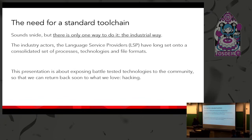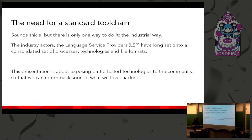Why do we need a standard toolchain? Although there are a lot of solutions out there to translate documents and software, too many times we have too many ways to skin the very same CAT. A lot of people are not in the translation industry, so they reinvent from scratch, which fragments efforts. The software industry needs to adapt to the industrial way of doing things. Industry actors — the language service providers, the LSPs — have long settled on a consolidated set of processes, technologies, and file formats. There's even a consortium called OASIS which standardizes file formats and interchange technologies to build a viable translation industry.